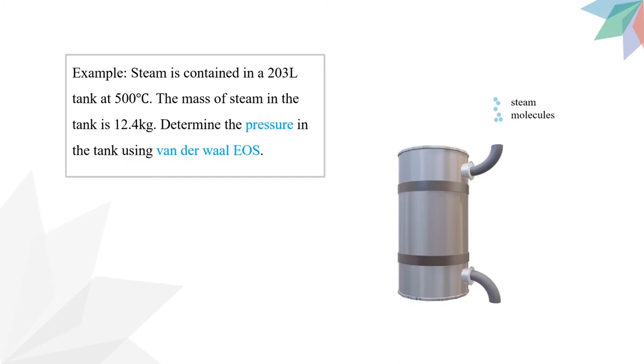This is an example of cubic equation of state. Steam is contained in a 203-liter tank at 500 degrees Celsius. The mass of steam in the tank is 12.4 kilograms. Determine the pressure in the tank using van der Waals' equation of state.